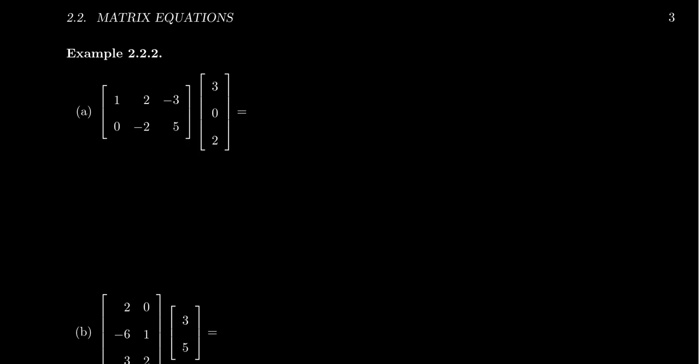And therefore, the matrix vector product, what we'll do is we'll take a combination of the column vectors of the matrix. So we have these three column vectors right here. We're looking for that linear combination: 1, 0, plus 2, negative 2, plus negative 3, 5.